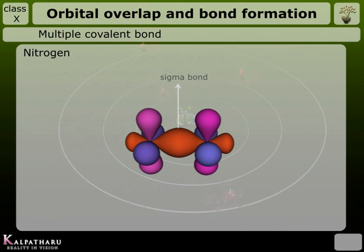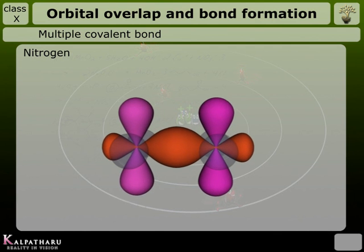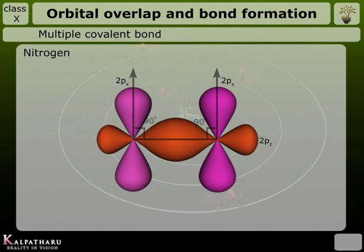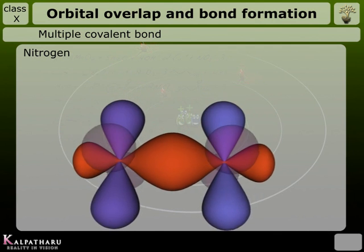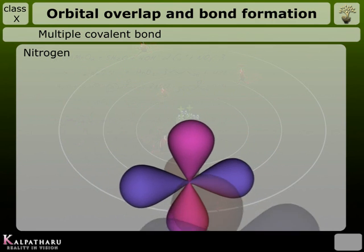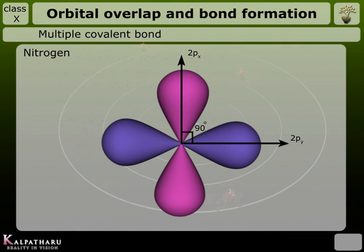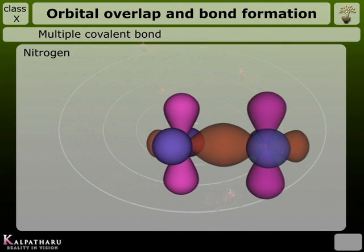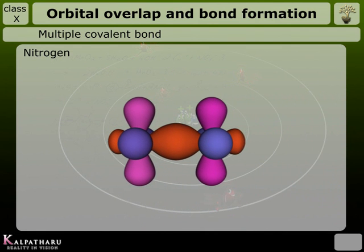The remaining two orbitals, 2pₓ and 2pᵧ, are perpendicular to 2pᵤ and perpendicular to each other. Therefore, they cannot overlap end-on-end.